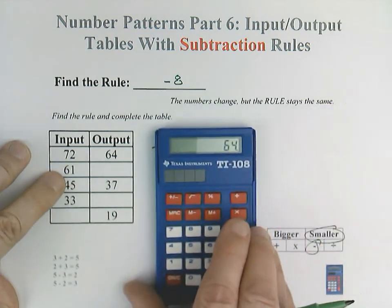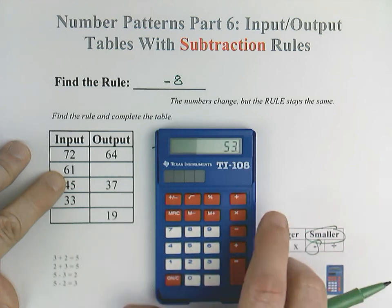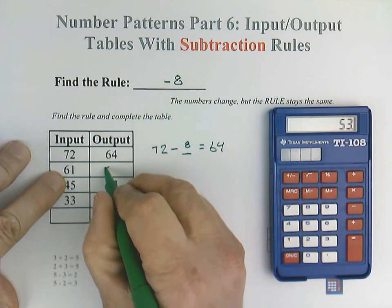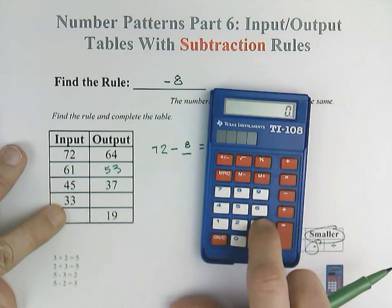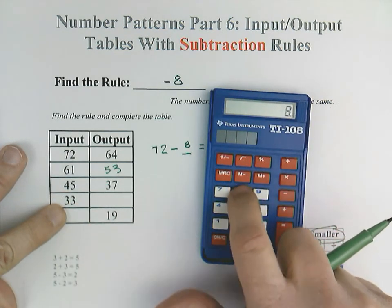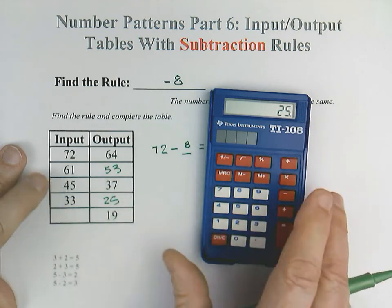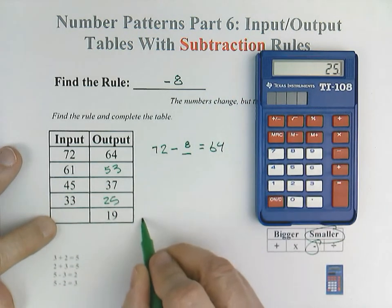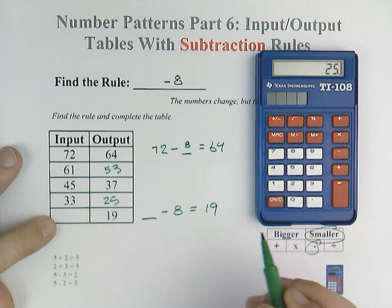So for this one, it's going to be 61 minus 8 equals 53. And down here, 33 minus 8. That's our rule. Minus 8 equals 25. Here, same thing. We're going to go blank minus 8 equals 19.